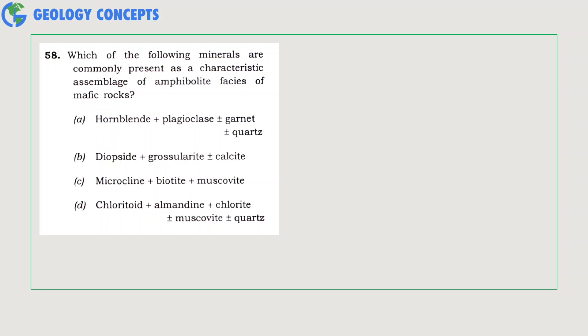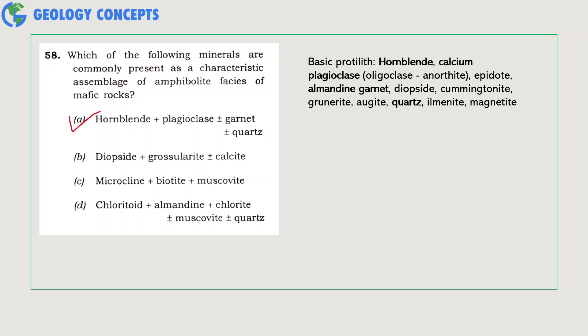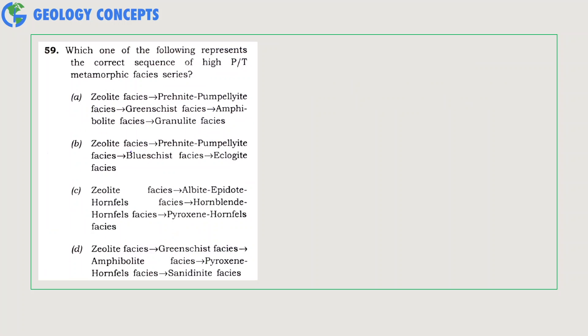Which of the following minerals are commonly present as a characteristic assemblage of amphibolite facies? In amphibolite facies, the basic protolith contains the assemblage of hornblende, calcium plagioclase (oligoclase-andesine), epidote, almandine garnet, diopside, cummingtonite, grunerite, augite, quartz, ilmenite, and magnetite. Hence, option A is the correct answer.